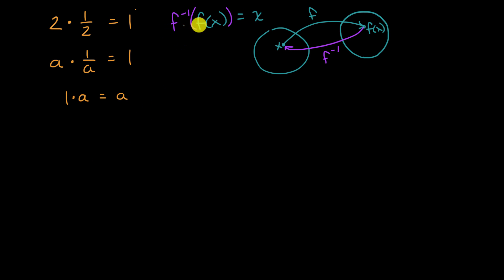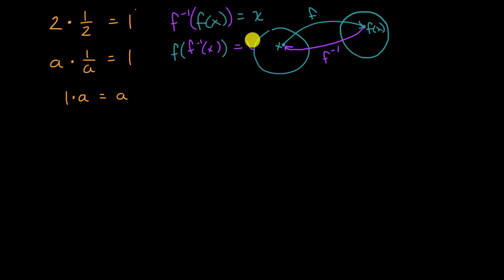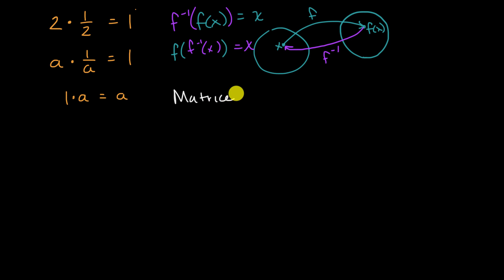We also know that it goes the other way around. For example, if you did f of f inverse of x, that too will get us back to x. So the natural question is: is there an analog for an inverse of a function, or for a reciprocal when we're multiplying, when we think about matrices? Let's play with a few ideas.